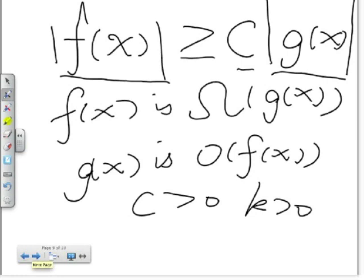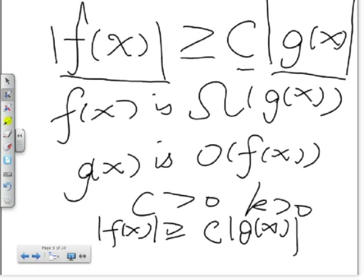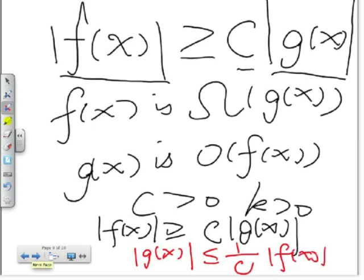We notice that if f(x) is Big Omega g(x), then g(x) must be Big O f(x), because if |f(x)| ≥ C|g(x)|, we must have |g(x)| ≤ (1/C)|f(x)|. Here, the witness is 1/C instead of C.